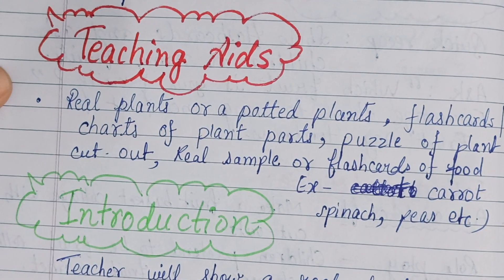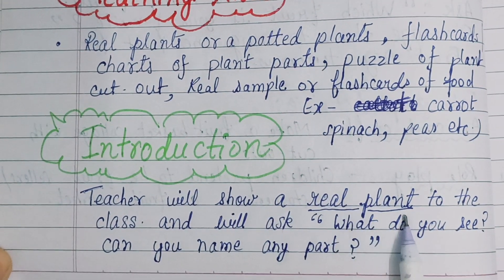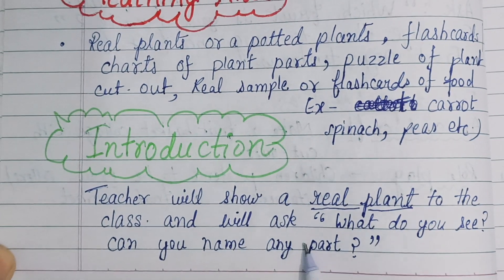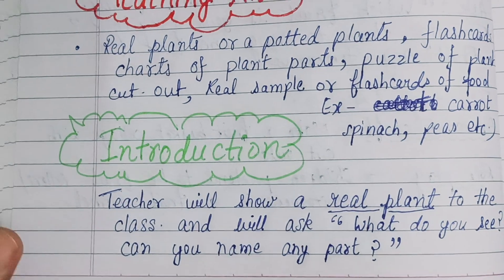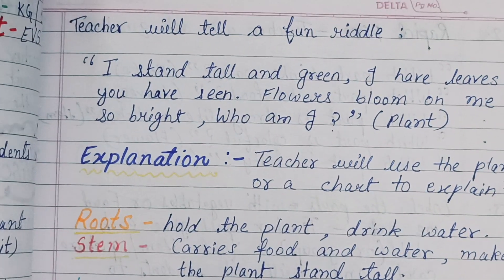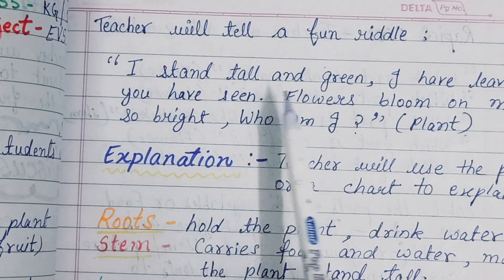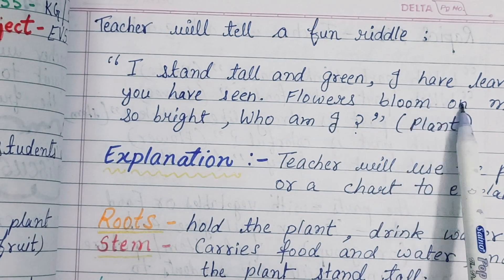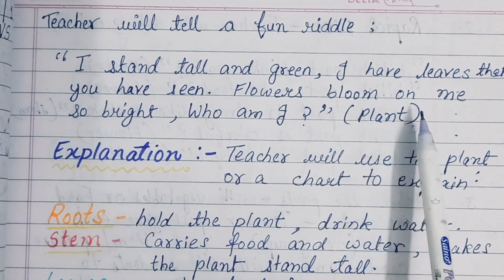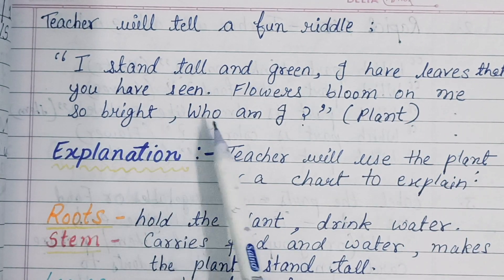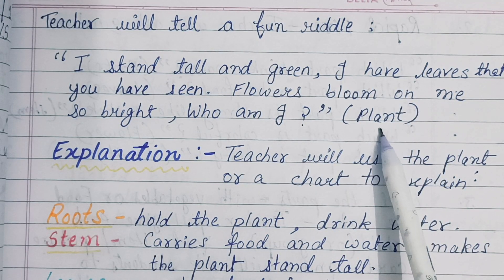Introduction: The teacher will show a real plant to the class and ask, 'What do you see? Can you name any part?' You can also tell a fun riddle: 'I stand tall and green, I have leaves that you have seen, flowers bloom on me so bright — who am I?' Students will guess the answer: plant.